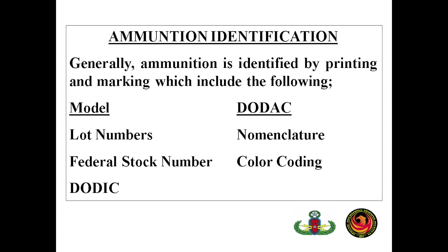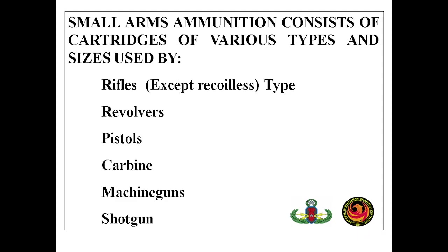Ammunition identification — generally, ammunition is identified by printing and marking which includes: the model, lot numbers, federal stock number, DODIC, DODAC nomenclature, and color coding. For example, dark green is for military use. Small arms ammunition consists of cartridges of various types and sizes used by rifles, revolvers, pistols, carbines, machine guns, and shotguns.